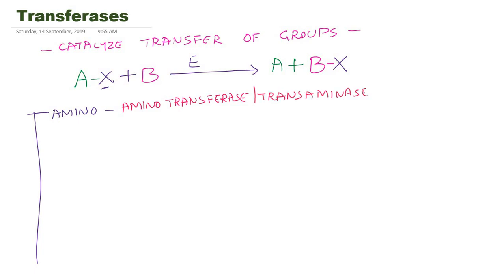Examples of aminotransferases include AST and ALT — that means aspartate transaminase and alanine transaminase.